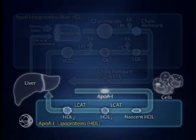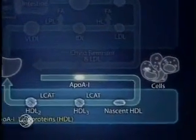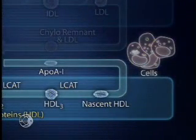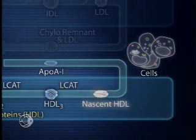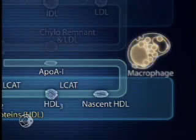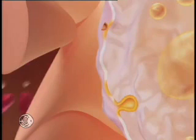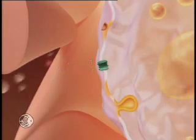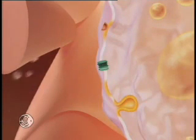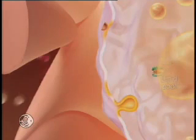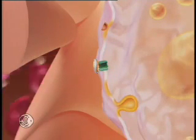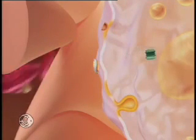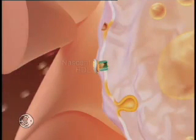Let's look at reverse cholesterol transport. To begin, poorly lipidated ApoA1 is secreted from the liver and intestine and released into the plasma for circulation to peripheral cells, where it removes excess cholesterol, forming nascent HDL. HDL's removal of cholesterol from cells is of utmost importance when those cells are cholesterol-laden arterial wall macrophages. The ABCA1 transporter operates to harvest free cholesterol and deliver it to the cell membrane, where it is acquired by poorly lipidated ApoA1 to create nascent HDL.